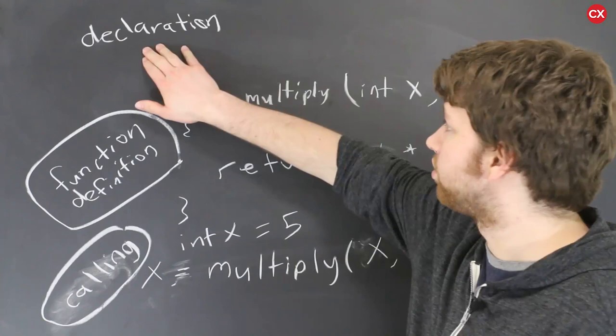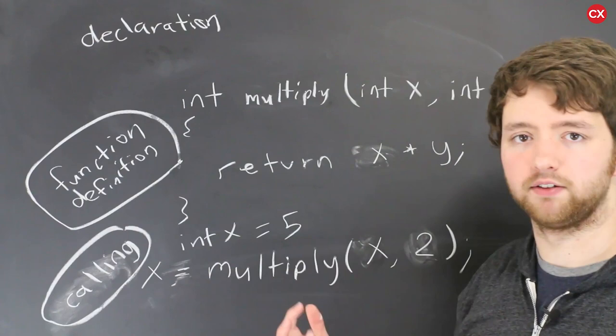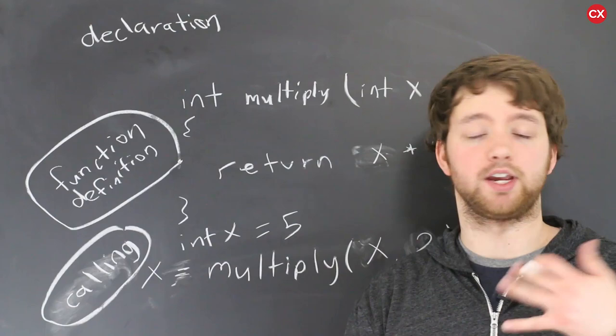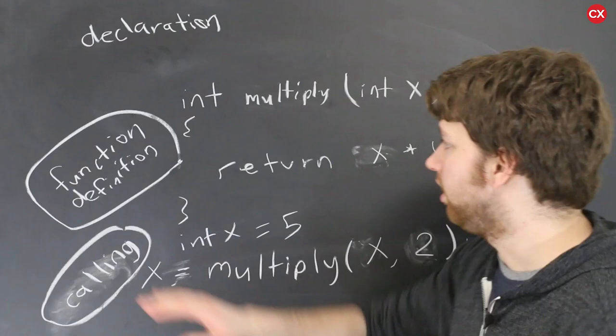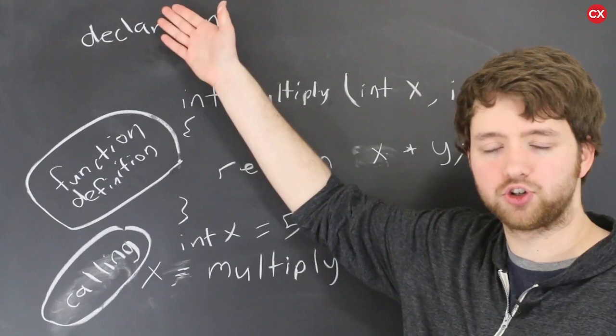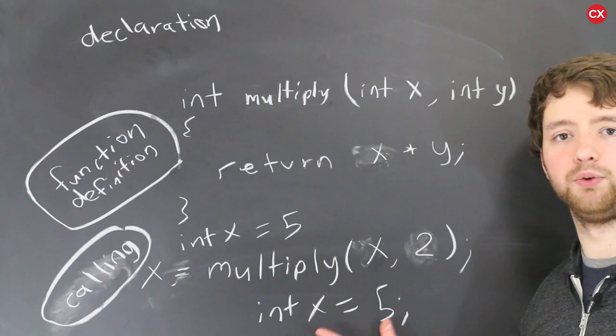So if you guys remember when we started talking about variables you can declare a variable without giving it a value. You can just say int x. That's it. Later on you can assign to it by saying x is five. Functions are similar in that you can have a function declaration but not actually define what it is. This is actually a requirement but fortunately when we do the function definition this can also serve as the declaration similar to how if you did int x equals five you kind of hit everything with one statement.